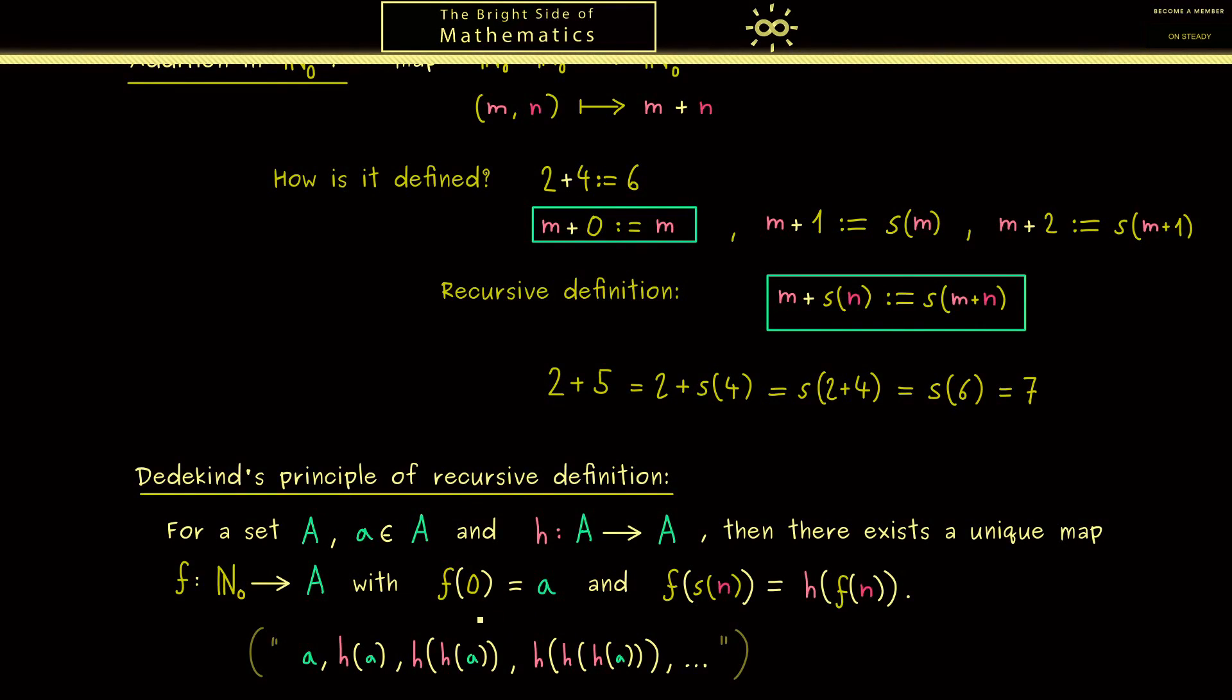This means that if we see something fixed at 0 and defined for the successors, then we know it exists and is uniquely defined by this property. For example, we now know that the addition is uniquely defined by these two boxes here.